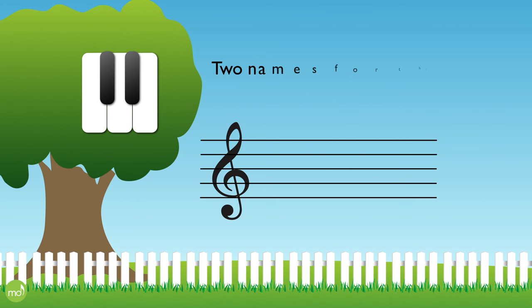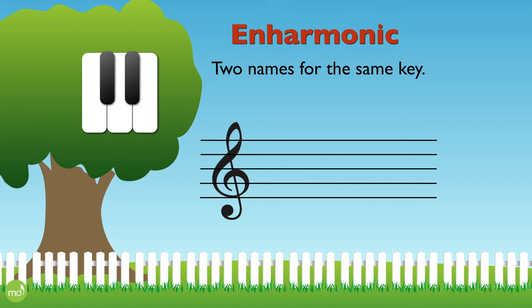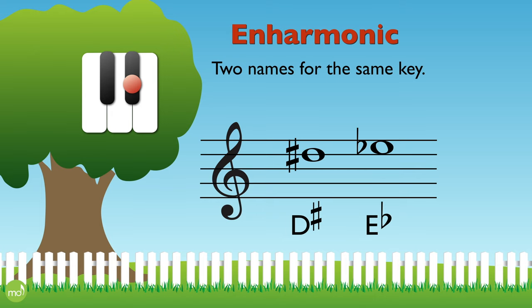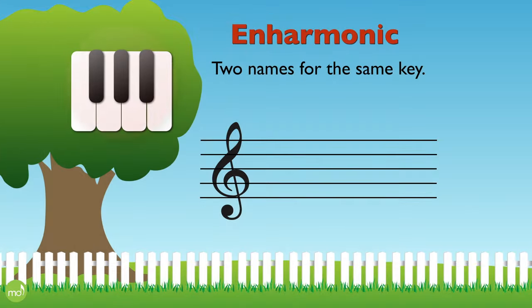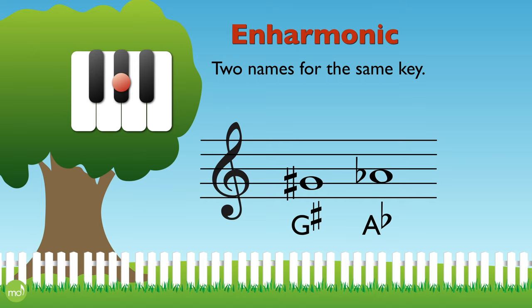So we can have two names for the same key — that's called enharmonic. Can you think of two names for this black key? Well, we could call it D sharp, or we could call it E flat. Those are called enharmonic notes. Here's another example: we could call this key G sharp, or we could call it A flat.